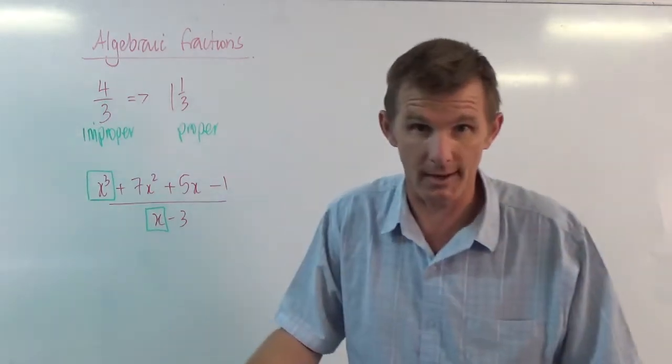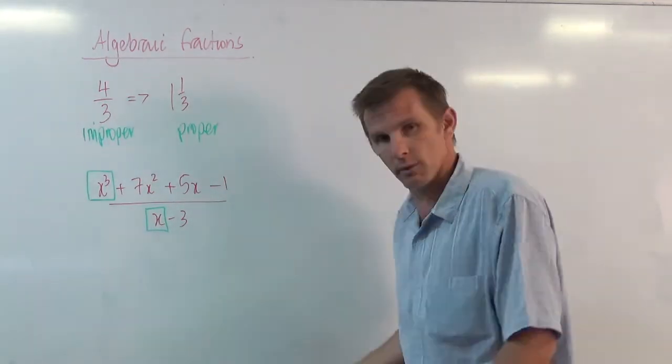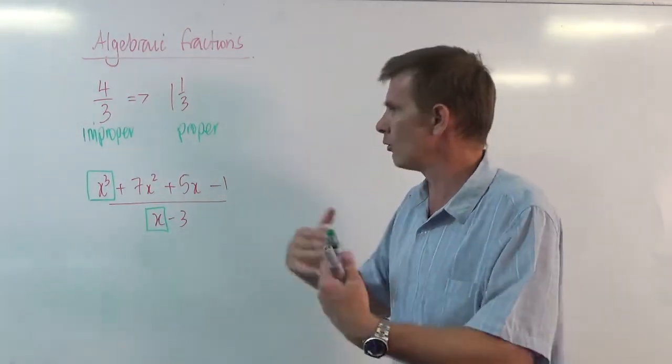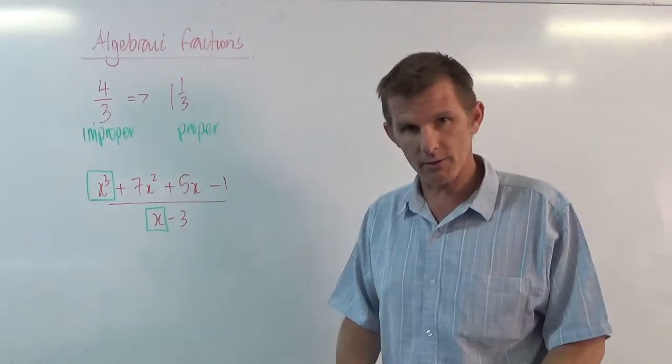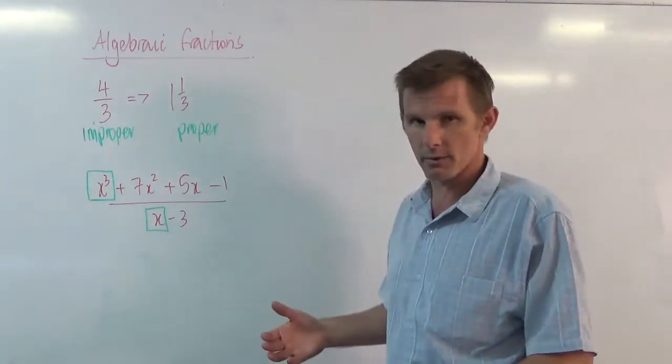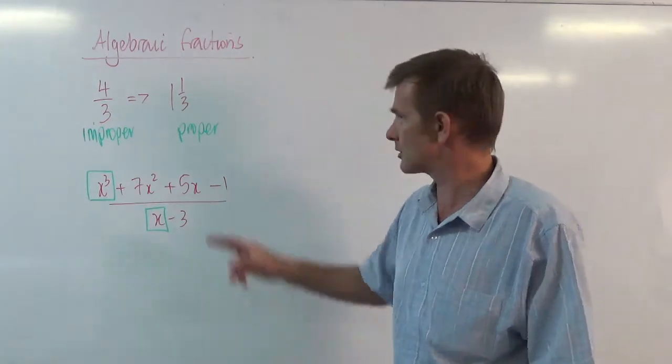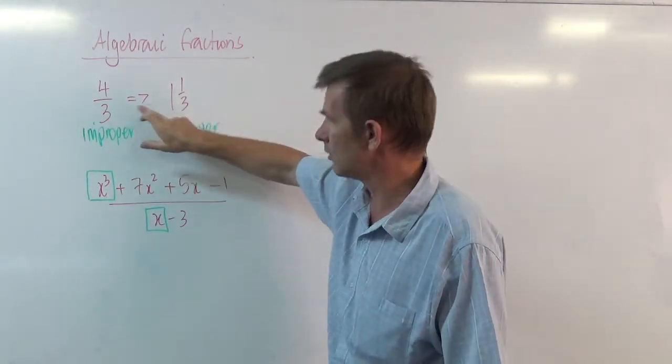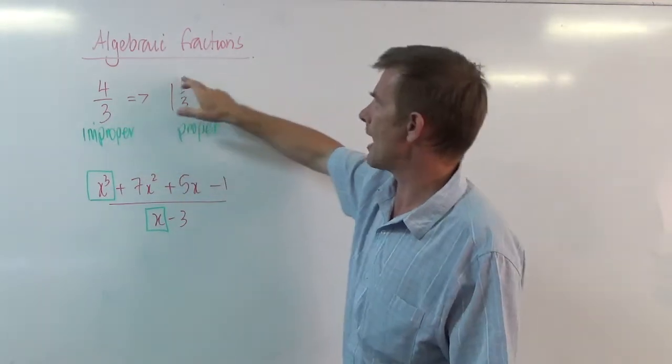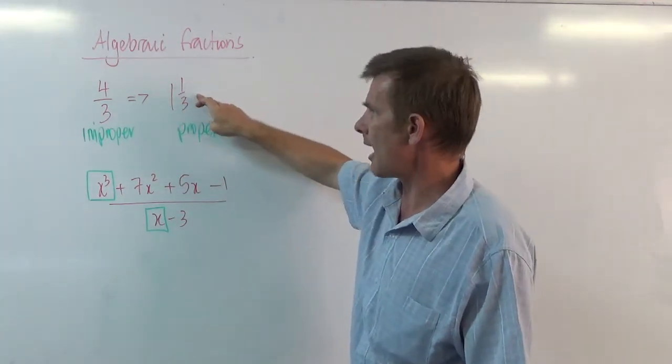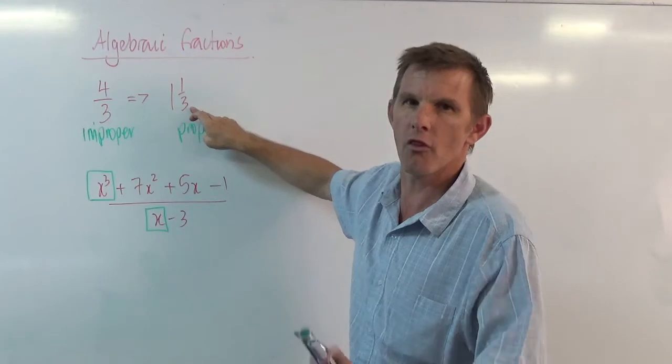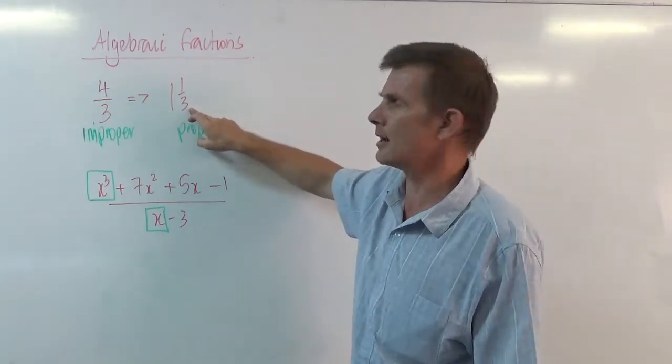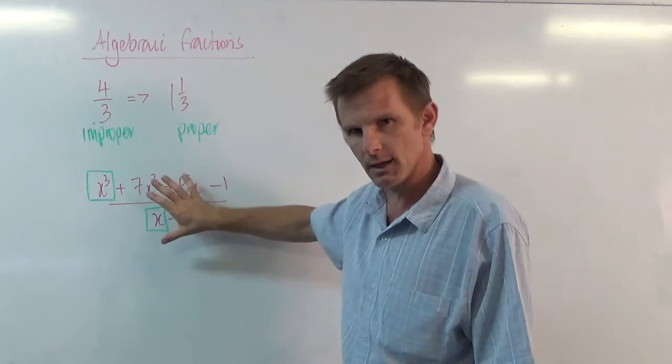You will recognize that x will divide into x cubed. It'll go in x squared times actually, and that's all we need to know. We need to know that the bottom will divide into the top. It doesn't matter whether it's exactly, it doesn't matter whether it works out with a remainder. That's all right. Just like here, this came out with a remainder. It's one whole lot of three and one remainder out of three. We're one third of the way along to our next whole number. We get the same idea here.